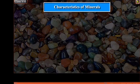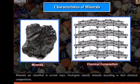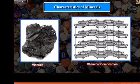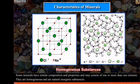Characteristics of Minerals: Minerals are classified in several ways. Geologists classify minerals according to their chemical compositions. Some minerals have a crystalline structure. They occur in a solid state as simple substances or natural compounds. Some minerals have similar composition and properties and may consist of one or more than one element. They are homogeneous and natural inorganic substances.